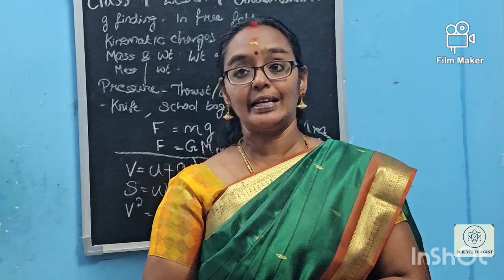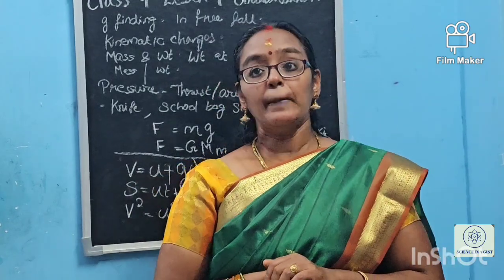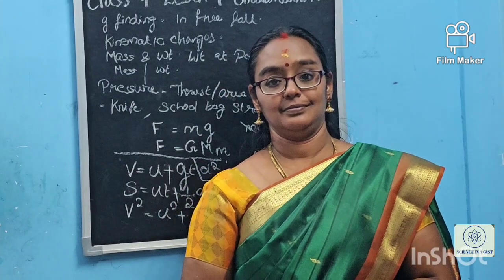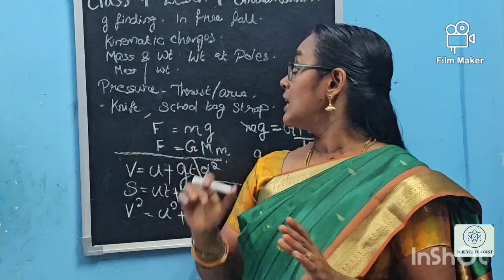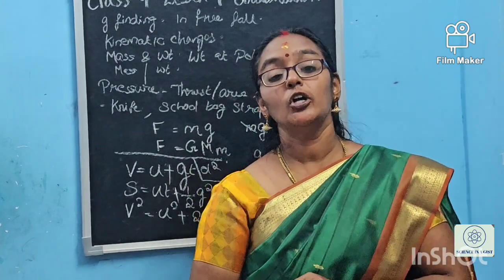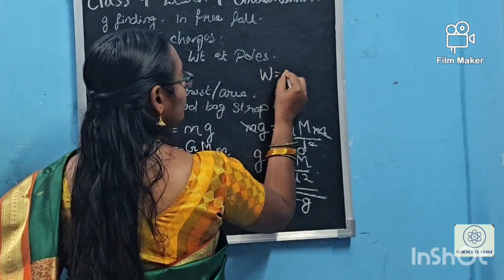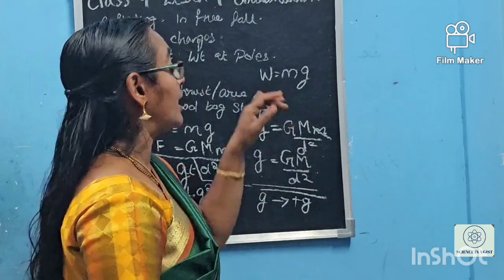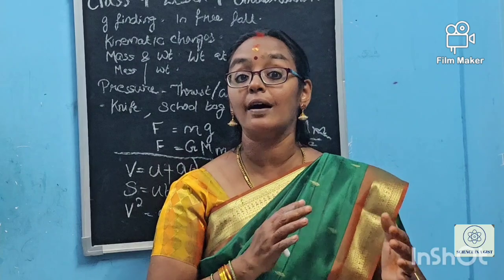Now an interesting concept: mass and weight. What is mass? Mass is the amount of matter present in a body. What is weight? Weight is different from mass. Weight is mass multiplied by the gravitational pull — W = mg. Mass M is the amount of matter inside us; weight includes the gravitational pull as well.